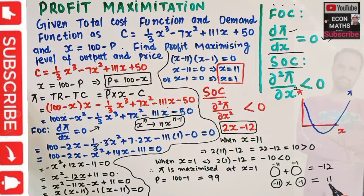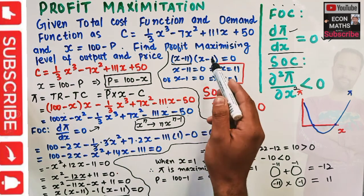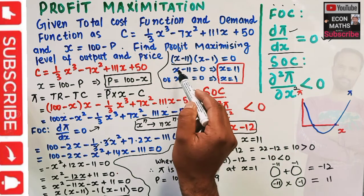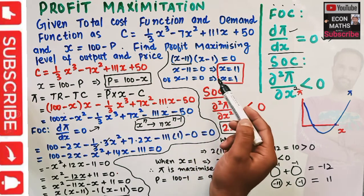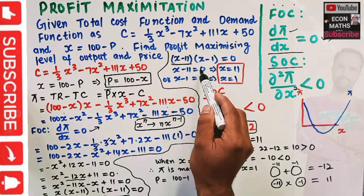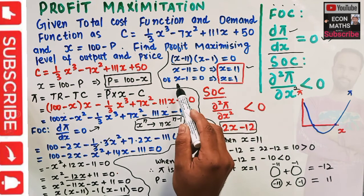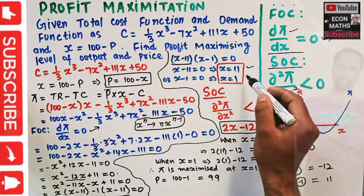Splitting the middle term: X² - 11X - X + 11 = 0. Factoring: X(X - 11) - 1(X - 11) = 0, which gives (X - 11)(X - 1) = 0. Setting each factor to zero: X - 11 = 0 gives X = 11, and X - 1 = 0 gives X = 1. These are our two critical points where marginal profit equals zero.